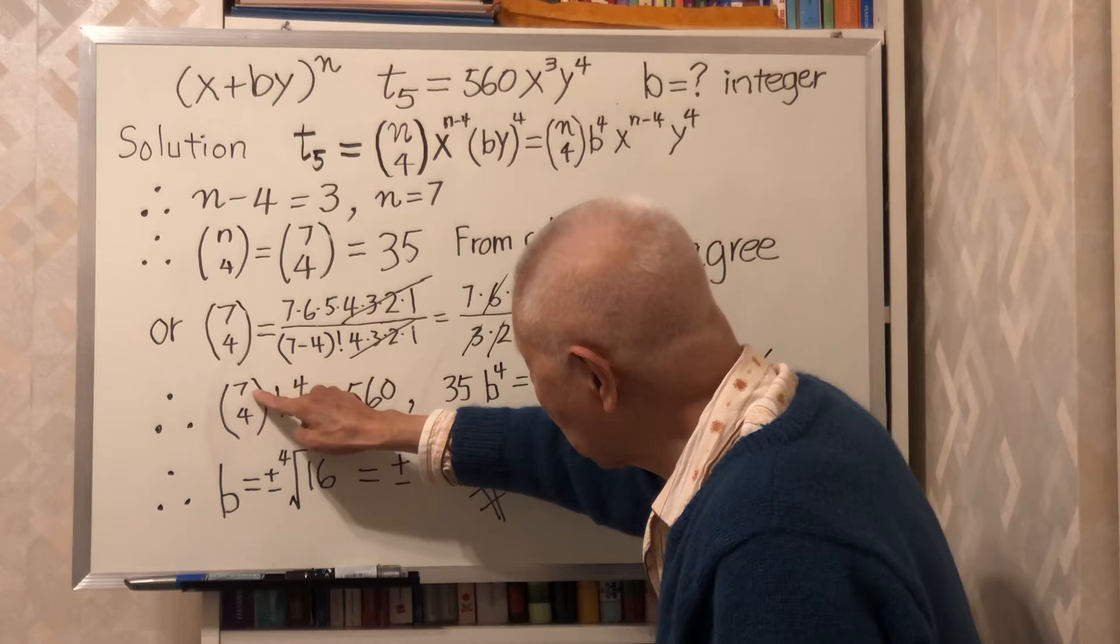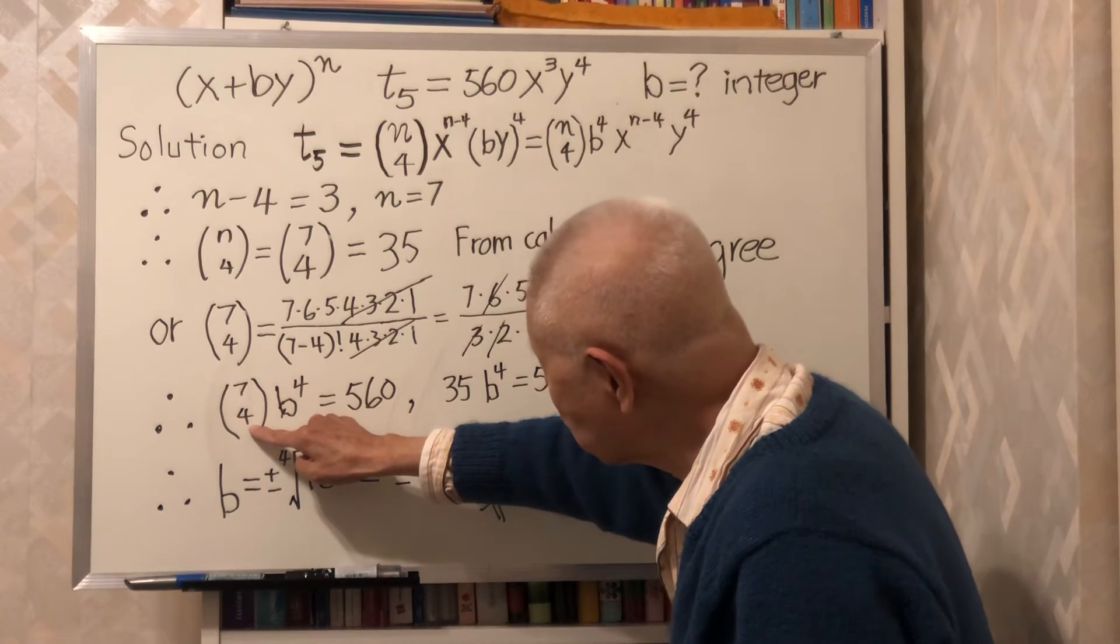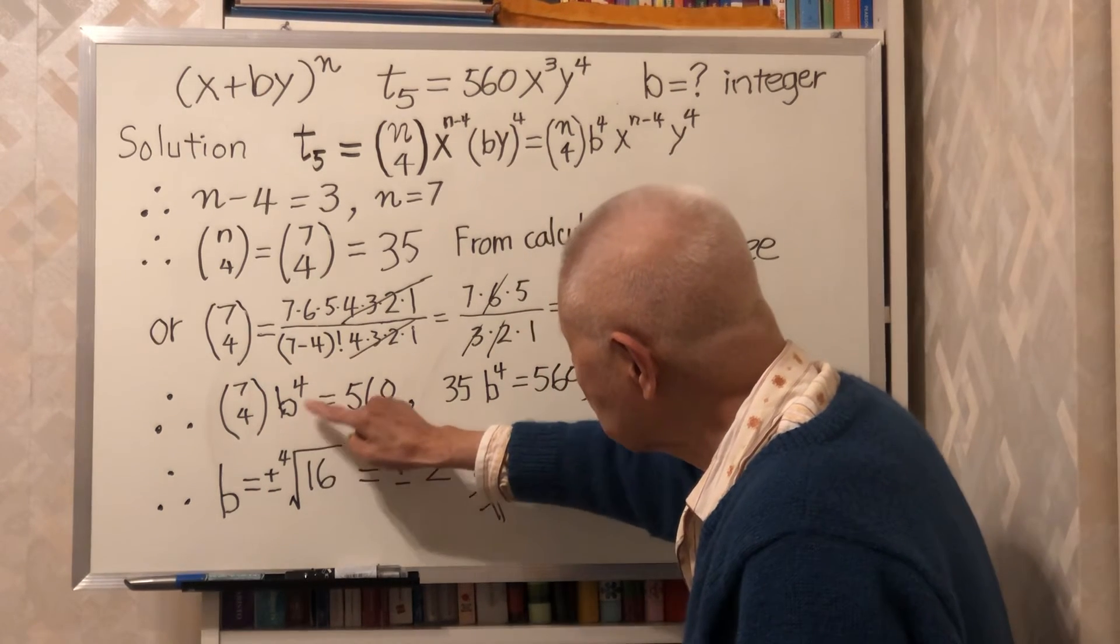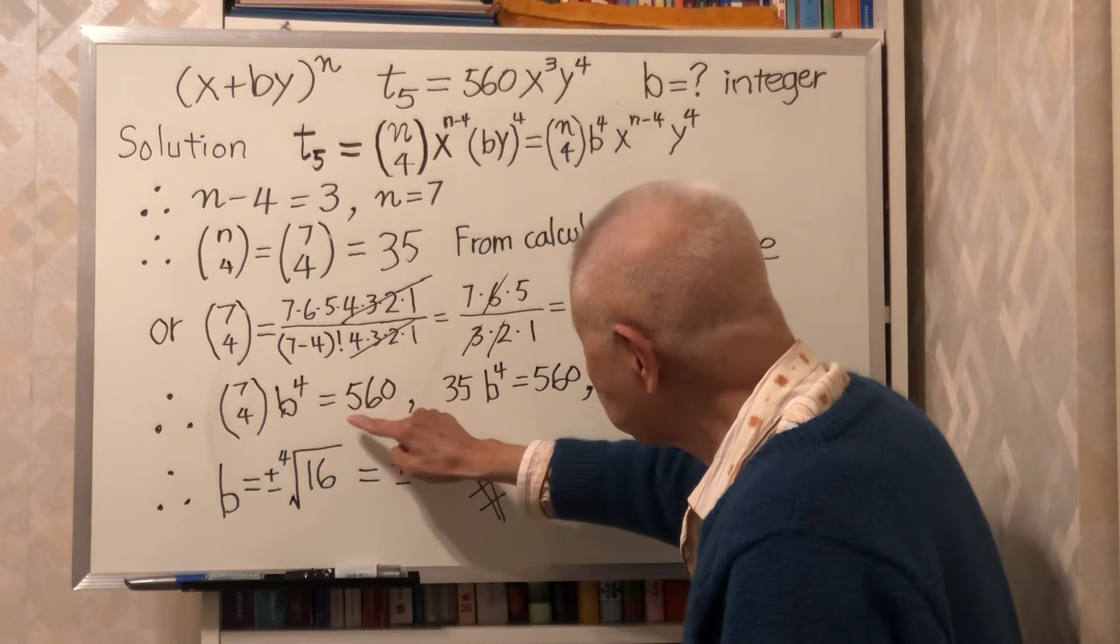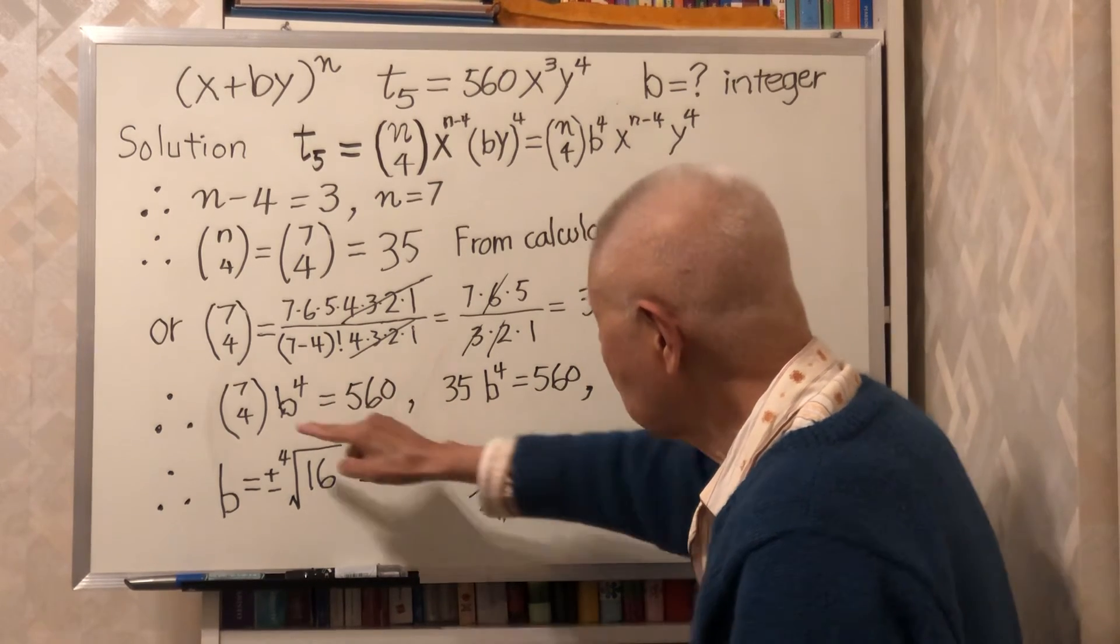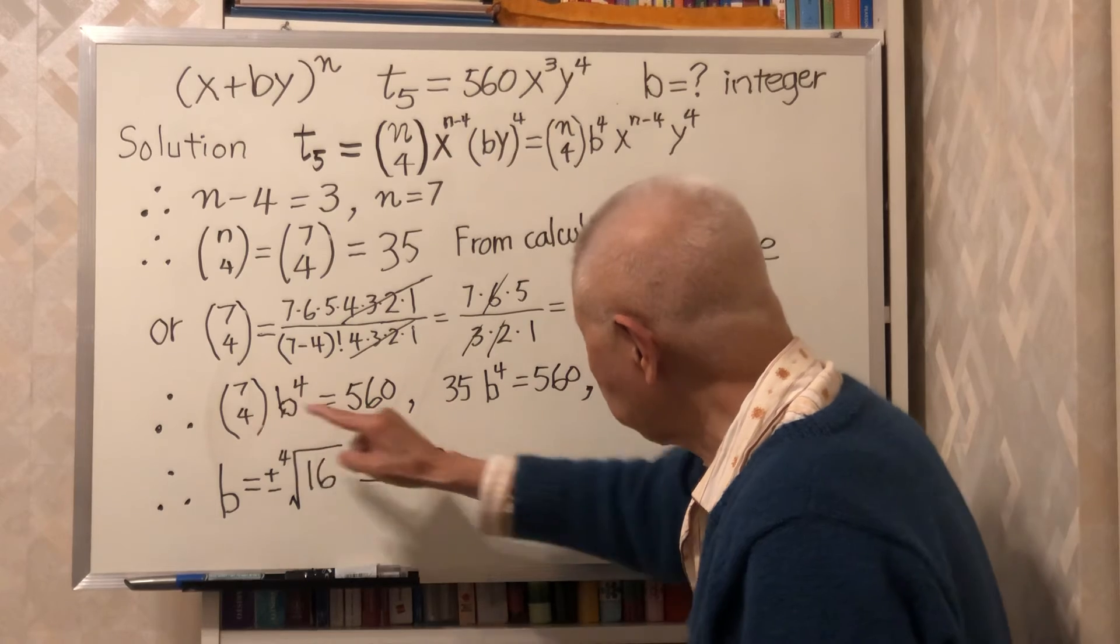n is 7, so 7 combination 4 times B to the exponent 4 should equal to 560. We already know this is 35.